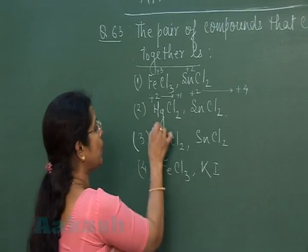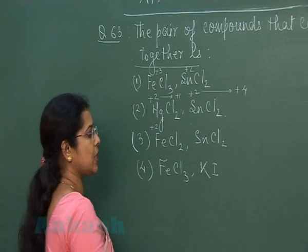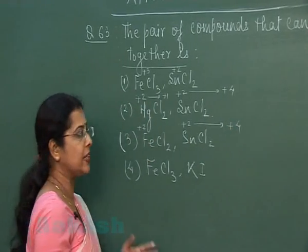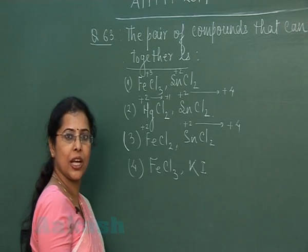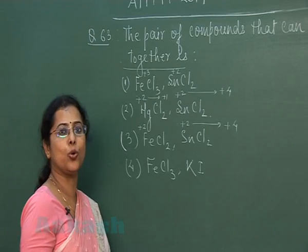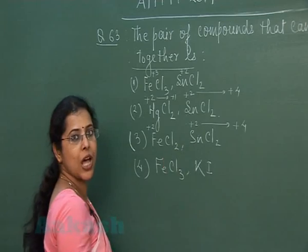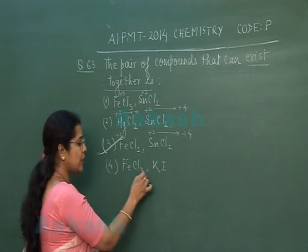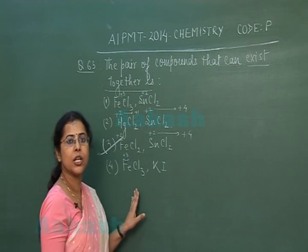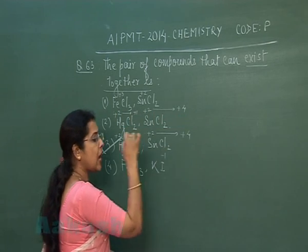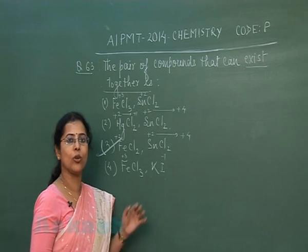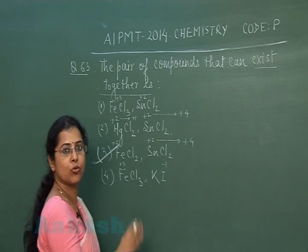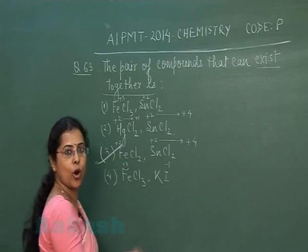In option 3, FeCl₂ has iron in +2 state and SnCl₂ has tin in +2 state. Tin may oxidize from +2 to +4, but Fe²⁺ can only oxidize to Fe³⁺ — it cannot accept electrons. So these two species are non-reacting and can exist together. In option 4, FeCl₃ acts as an oxidizing agent while KI (iodide in −1 state) is a reducing agent; they would react. Therefore, the correct answer is option 3.